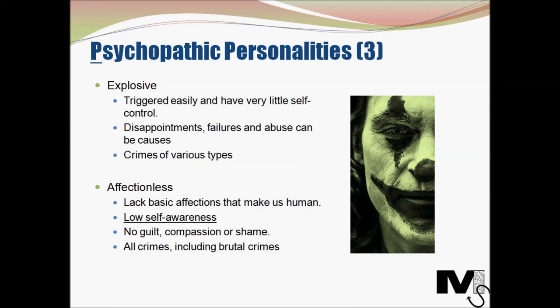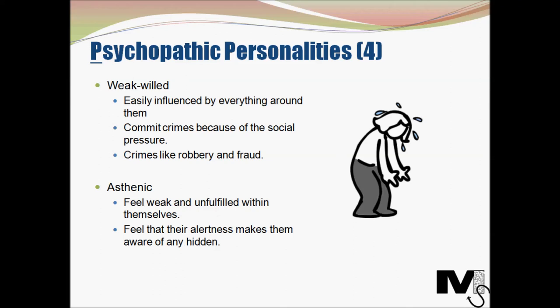The next type is the weak-willed type. Weak-willed psychopaths tend to be younger than most others and are people who easily get influenced by everything around them — especially by people or groups that they idolize. They often commit crimes because of social pressure, as they can be molded into various forms by the right type of stimulus. If the influences around them lead them in the wrong direction, they will go in that direction. This type tends to commit crimes like robbery and fraud.